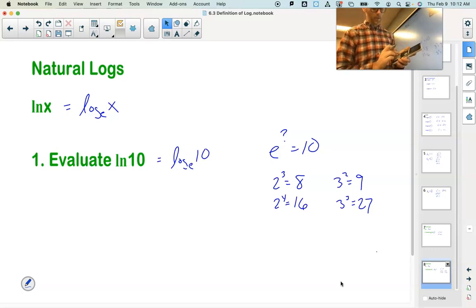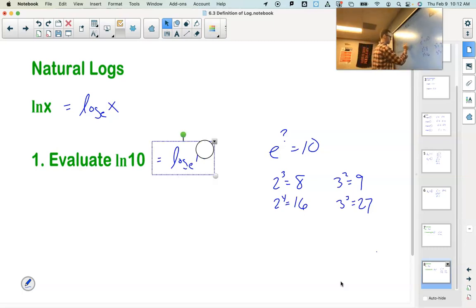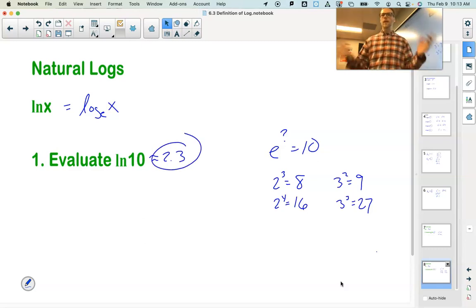If I do a quick estimate. Here we're going to use our calculator, and just use that natural log button. The natural log of 10 is about 2.3.